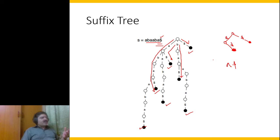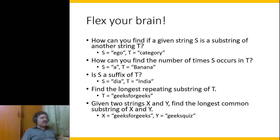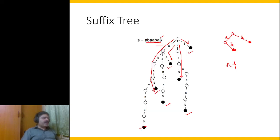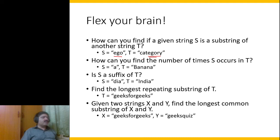Now that we know how to construct a suffix tree, let us take the problems and try to address them. How can you find if a given string s is a substring of another string t? If I want to see whether 'ego' exists in 'category', there must be some suffix which starts with 'ego'. All we have to do is go to our tree and see if there is a path starting with 'ego'. If the path continues or branches, we can confirm that 'ego' is a substring of t.